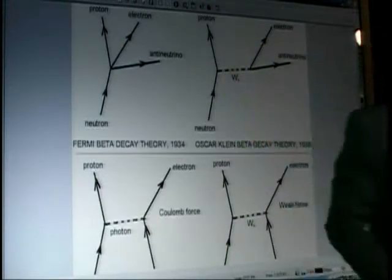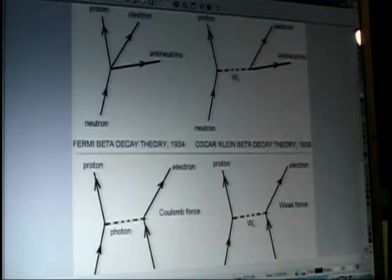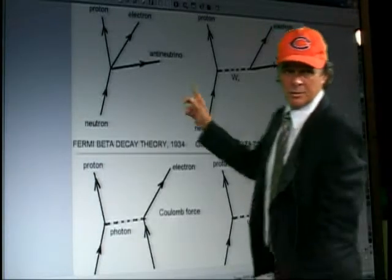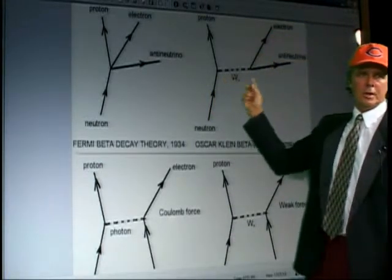But here it had it all coming out of one point. Then, this guy, I have to admit, I never heard of him. Maybe it's two guys. Oscar was the last name. Oscar Klein beta decay theory. Four years later, in 1938, this has the W as an intermediate.